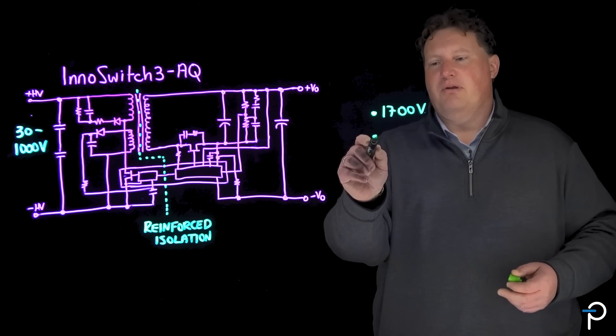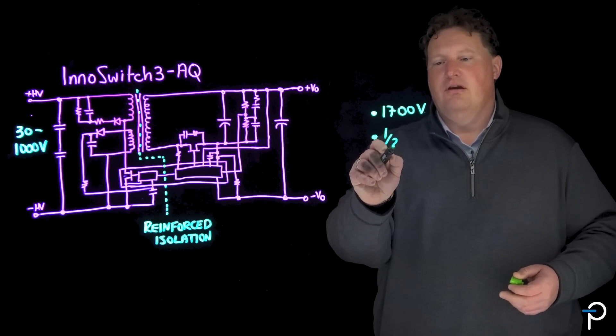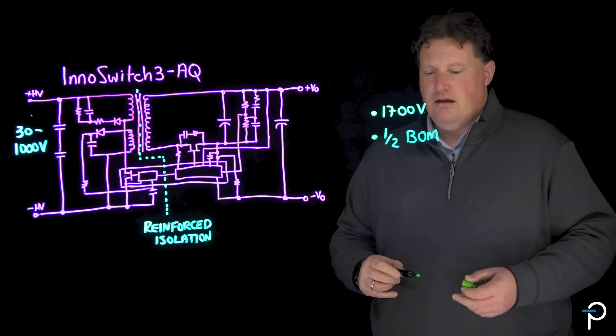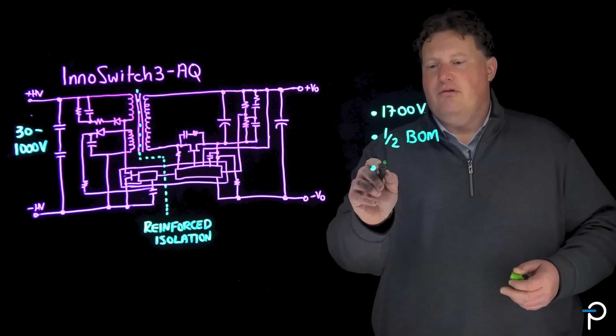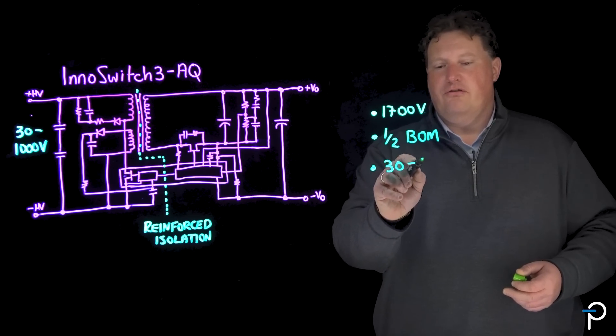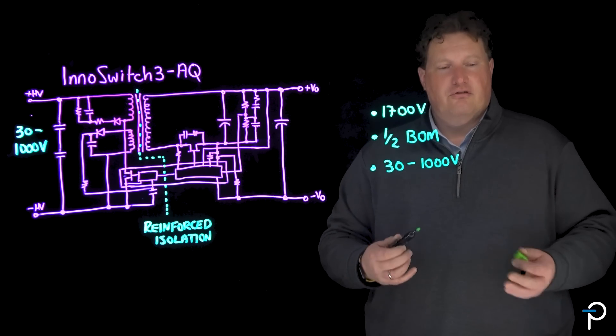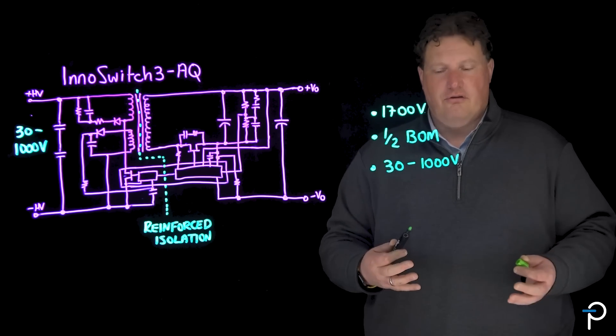These designs typically have half the component count of a discrete design, saving cost and board area, and are capable of operating from 30 volts to 1,000 volts input with no additional componentry, including across temperature.